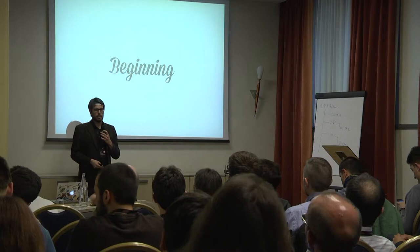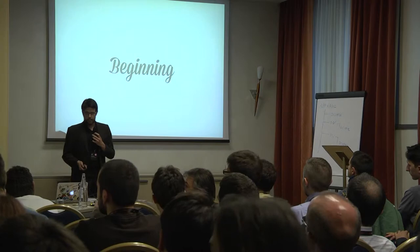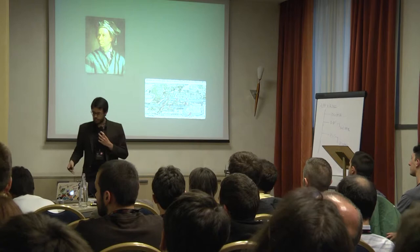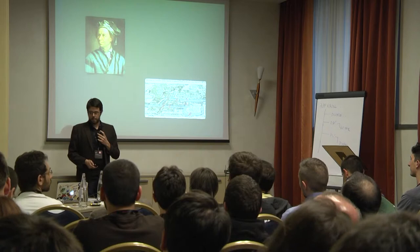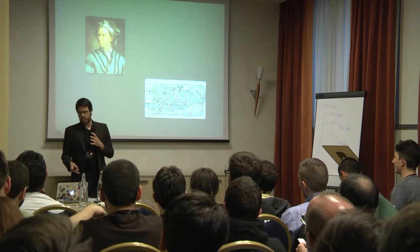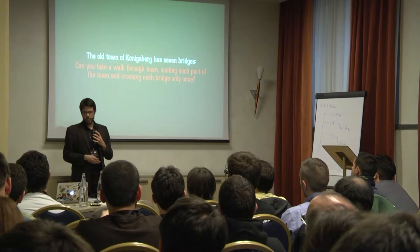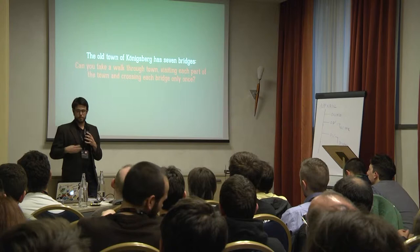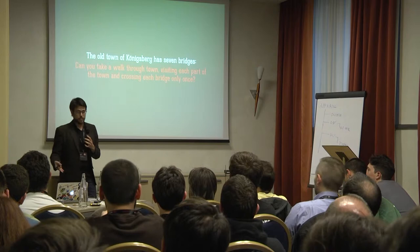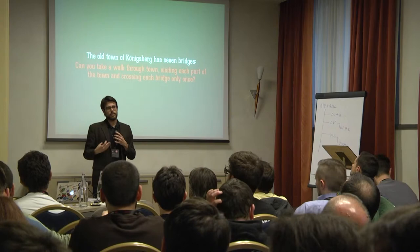Let's start from the beginning. Graphs have been around since the 18th century, thanks to the mathematician Euler, who had time to think about meaningful things — they didn't have Twitter to lose time. He lived in Königsberg, in Prussia, and asked himself: can you take a walk through town, visiting its parts and crossing its bridges only once? The answer is no, but the interesting thing is that this problem was the start of graph theory.